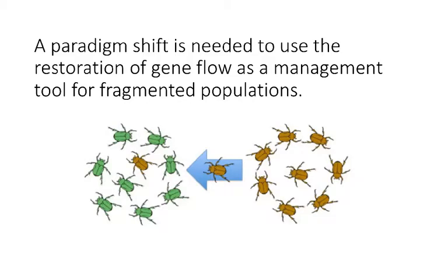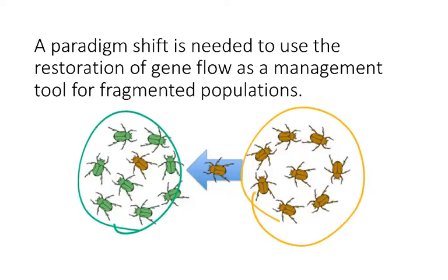This technique isn't used super often, and we'll talk in the next video about why there are some hesitations. But recent reviews and papers have indicated there should really be a paradigm shift to use this technique of gene flow restoration as a management tool for fragmented populations. A recent review estimated there are only about 30 cases in which translocation of plants or animals was done to achieve genetic rescue for a threatened population. We really should be thinking about whether we can assist gene flow and translocate some individuals to increase genetic diversity, reduce inbreeding, and promote genetic rescue of otherwise threatened and isolated populations.